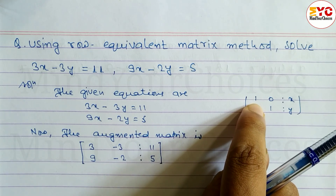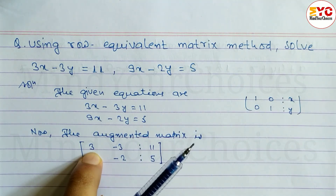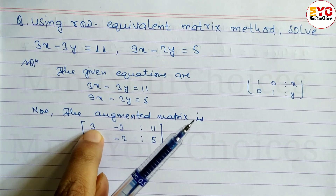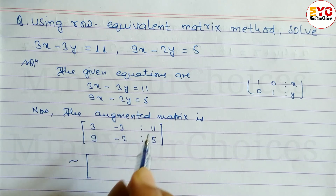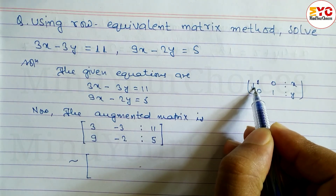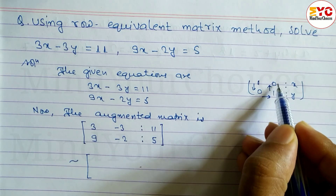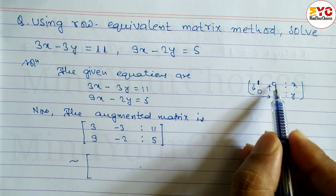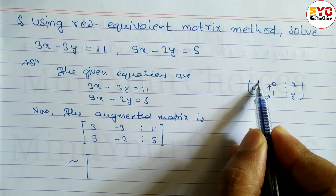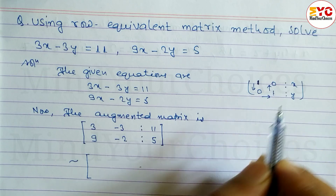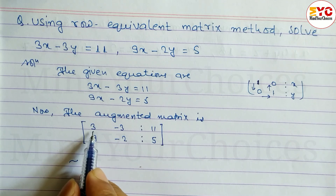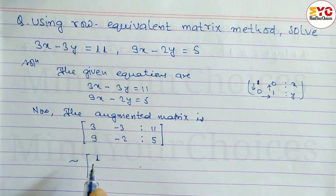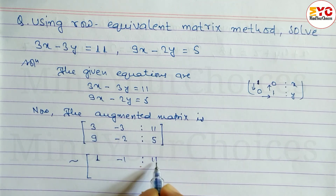To make the 3 into 1, we divide row 1 by 3. So R1 becomes R1 divided by 3. That gives us: 3 divided by 3 is 1, minus 3 divided by 3 is minus 1, and 11 divided by 3.